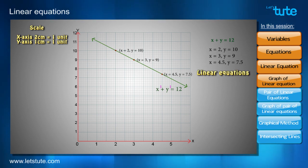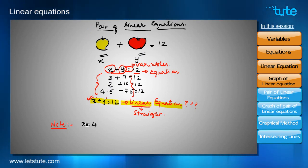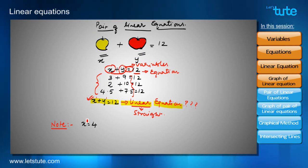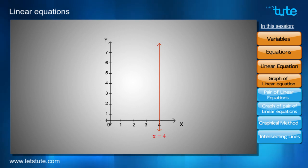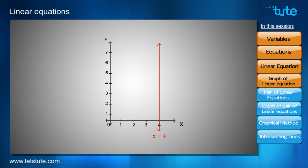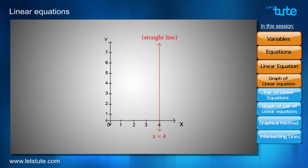We should note that equations like x equals 4 also have only one variable — x — with a power of 1. Looking at the graph, this line passes through the point 4 on the x-axis and is parallel to the y-axis, because for every value of y, x equals 4. Since this equation gives a straight line, it is also called a linear equation.